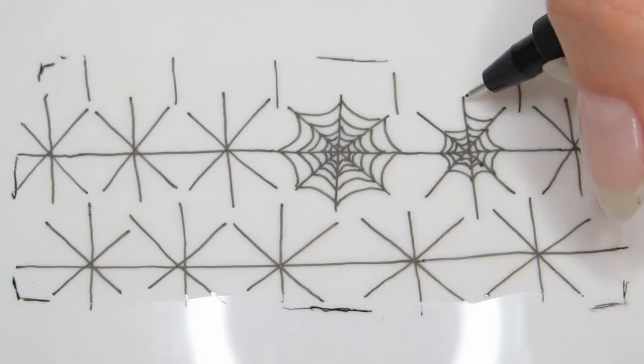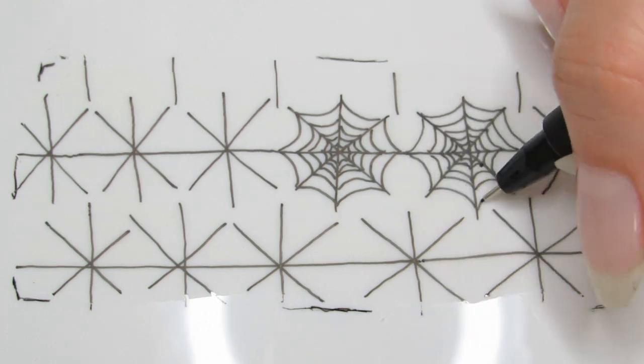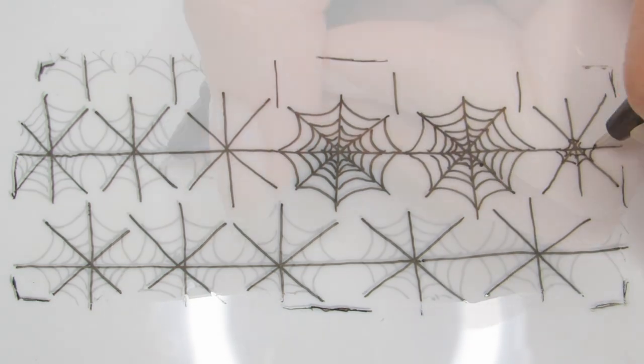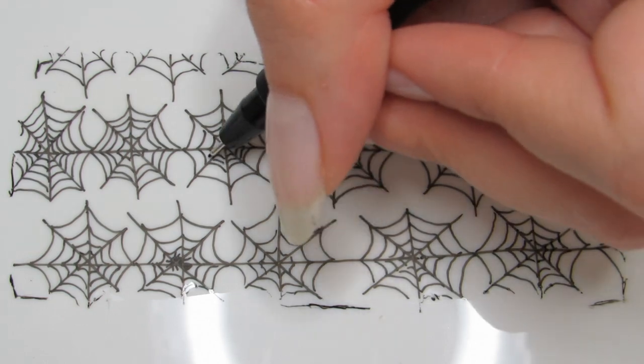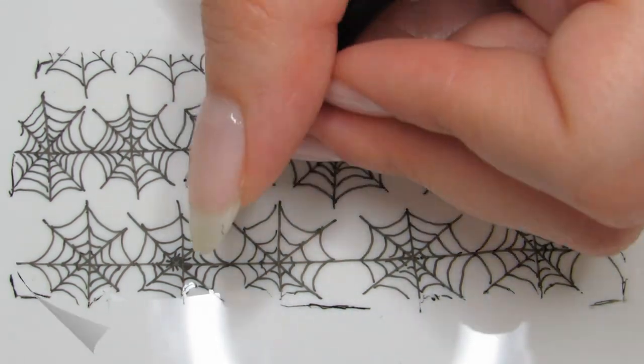Repeat on all the X patterns, and try varying the amount of lines you make on each web. That way all your nails will be different. All the products I used are listed in the description box.